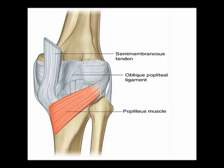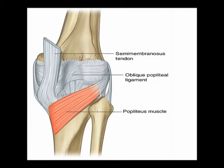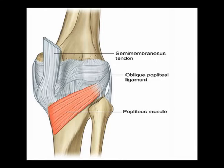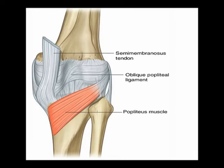The popliteus muscle is located in the posterior knee. It originates on the lateral condyle of the femur and on the posterior horn of the lateral meniscus of the knee. The muscle runs inferior and medial and attaches to the posterior surface of the tibia, just superior to the origin of the soleus muscle.